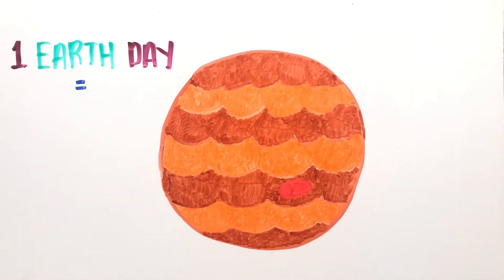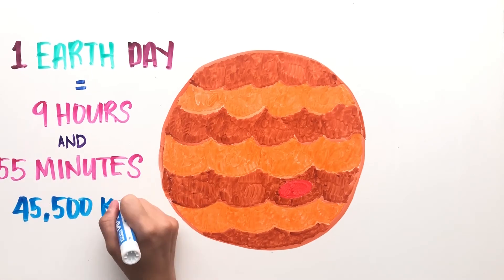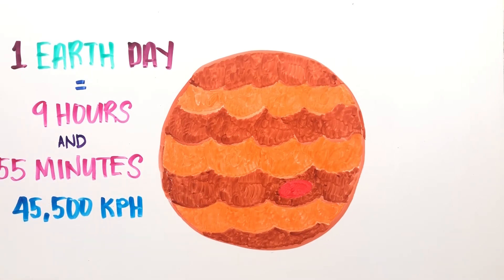A day on Jupiter only lasts 9 hours and 55 minutes, making it the shortest day out of all the planets in the solar system. It spins at 45,500 kilometers per hour, which is almost 28 times the speed of Earth.